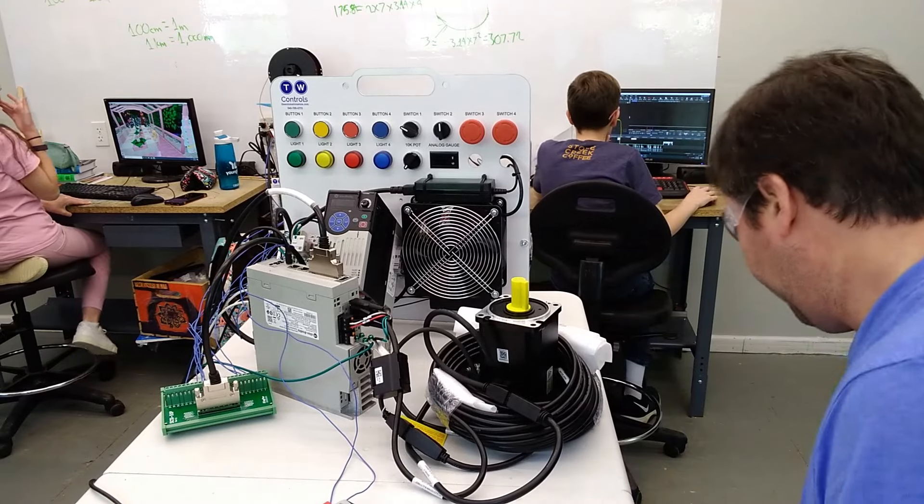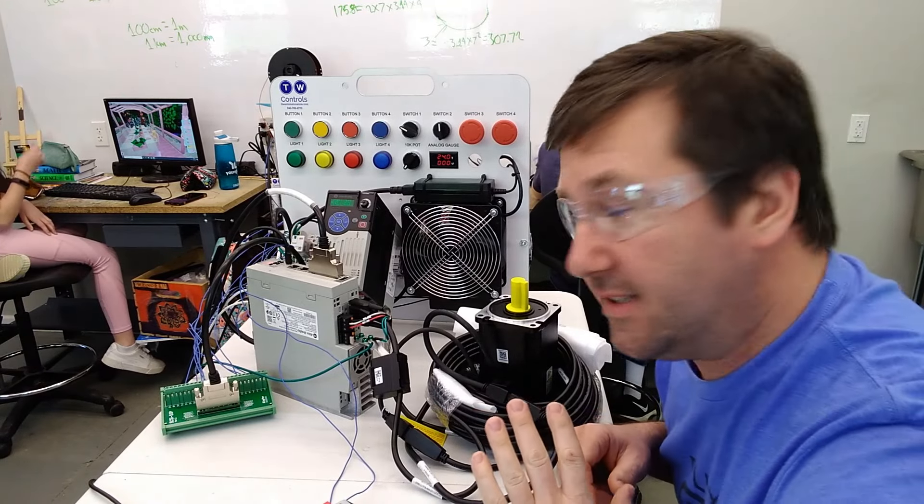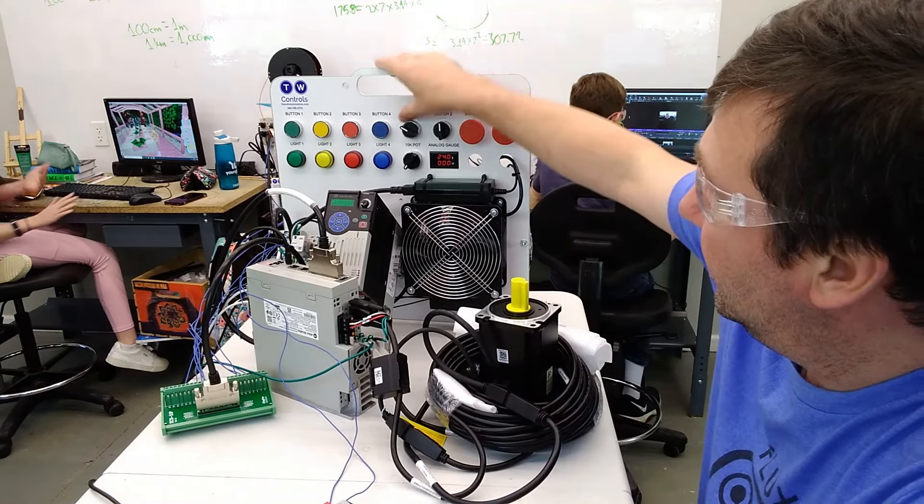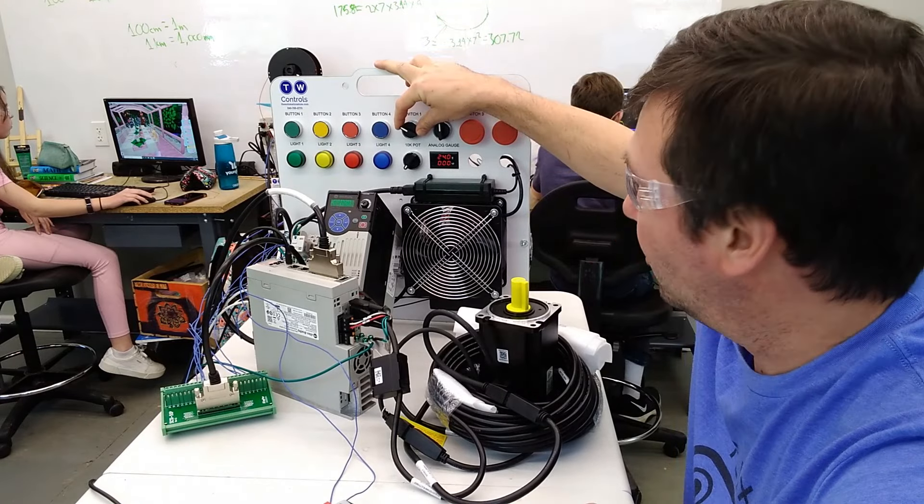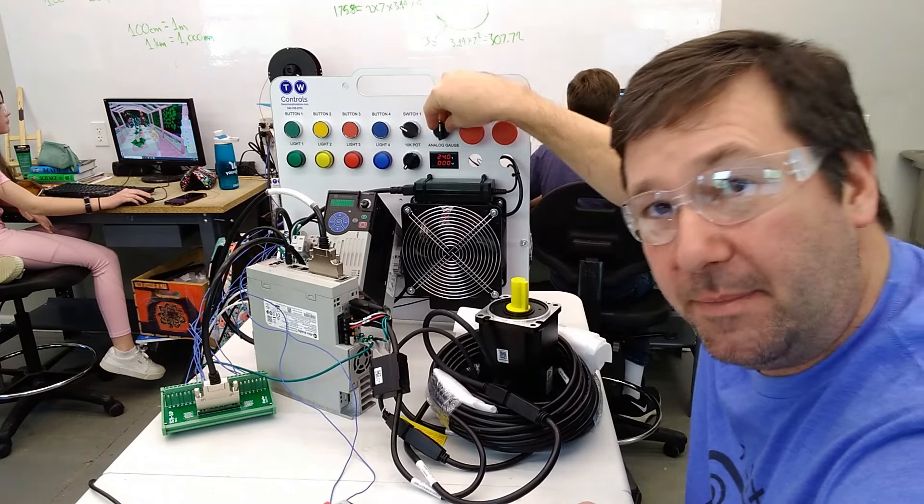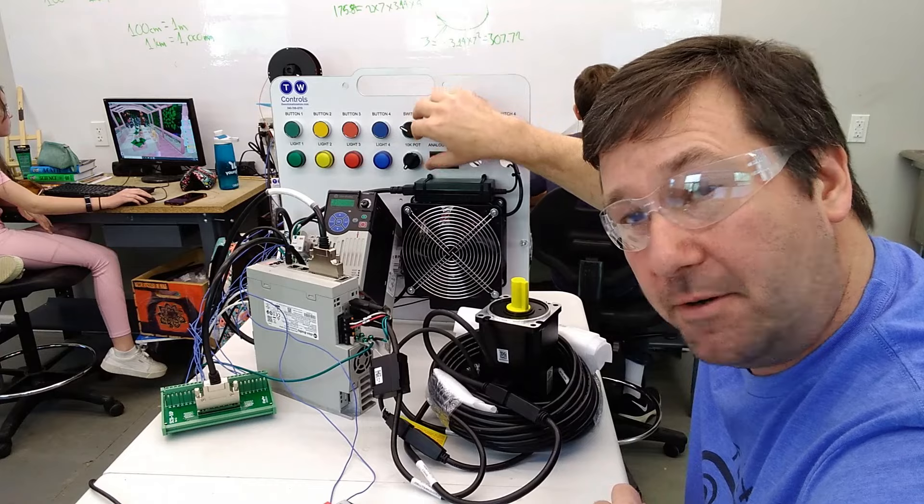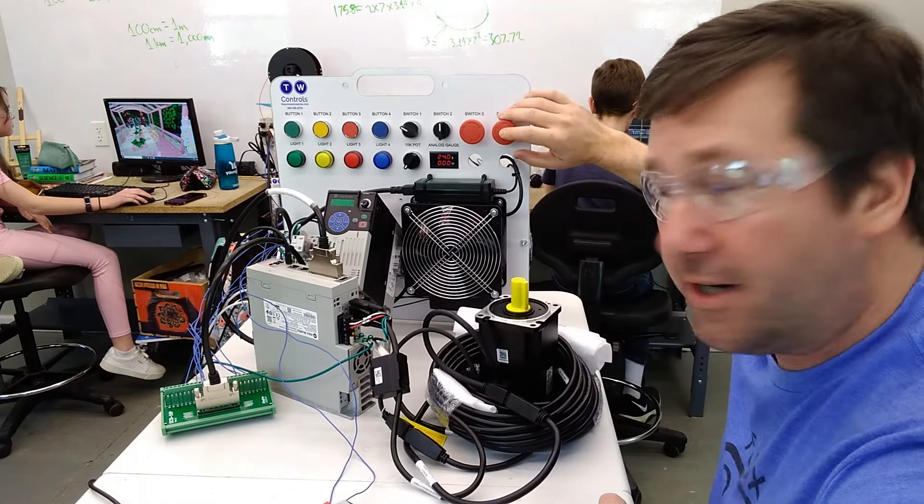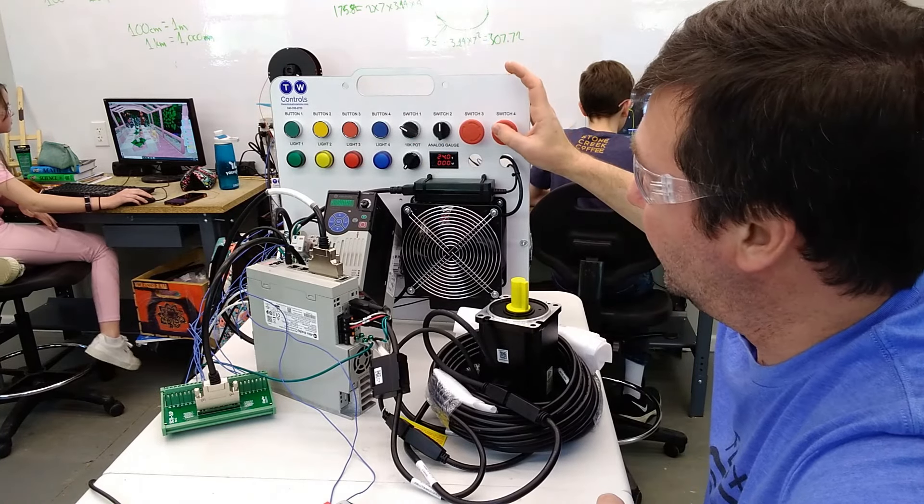Let's go ahead and throw some power on this and talk about the setup. I've made switch one the enable for the servo. I've made switch two the over-travel so we can talk about it, and I've wired in this e-stop right here.